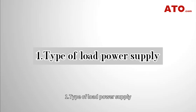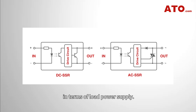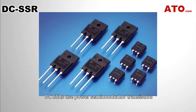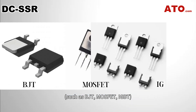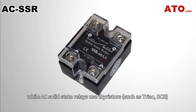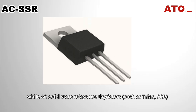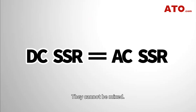1. Type of Load Power Supply. Solid-state relays can be divided into DC solid-state relays and AC solid-state relays. DC-SSRs use power semiconductor transistors such as BJT, MOSFET, and IGBT as switching components to control the on-off state of DC load power. While AC solid-state relays use thyristors such as TRIAC and SCR as switching elements to control the on-off state of the AC load power supply. They cannot be mixed.